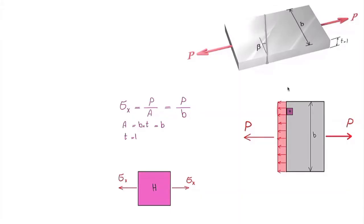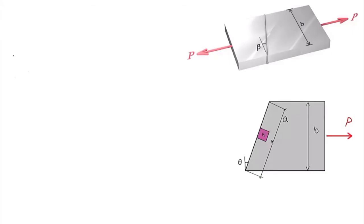Now let's look at the state of stress on the inclined plane. Instead of the vertical cut, we cut parallel to the weld. The stress element has rotated so that its face aligns with the inclined plane of the weld. Using the free body diagram, in order to maintain equilibrium the same amount of force must exist on that plane. This force has two components: one perpendicular to the cut section, the normal force N, whose magnitude is determined by the angle theta of the inclined line.